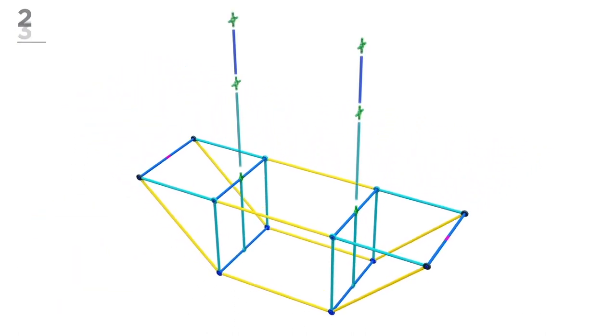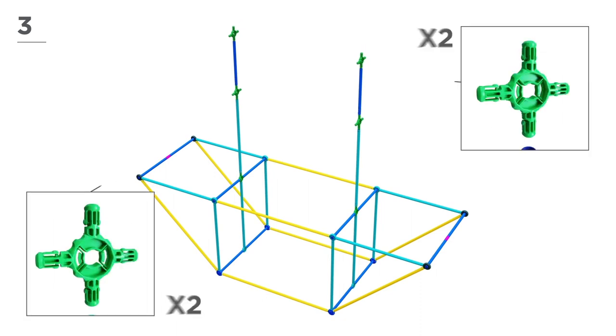Now add 2 blue poles, 2 navy poles, and 4 green connectors.